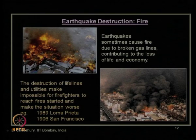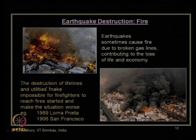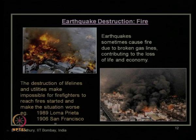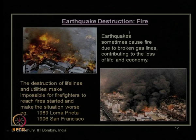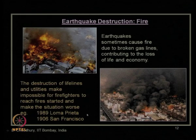Along with earthquake-related damages, fire hazards are an indirect effect but very well connected to earthquake damages, and they propagate at a very fast rate causing much more damage. The destruction of lifelines and utilities makes it impossible for firefighters to reach the fires, making the situation much worse. Examples include the 1906 San Francisco earthquake in California, where more damage occurred due to fire, and the Loma Prieta earthquake of 1989, also in California.